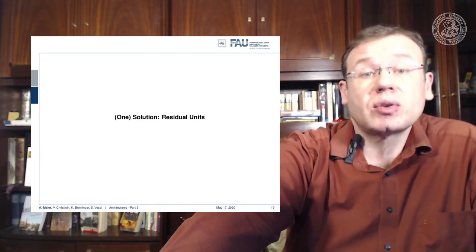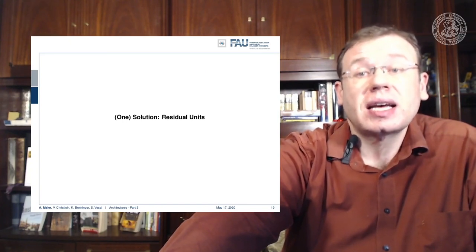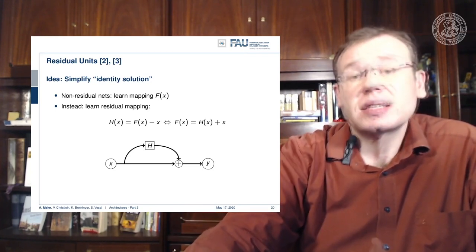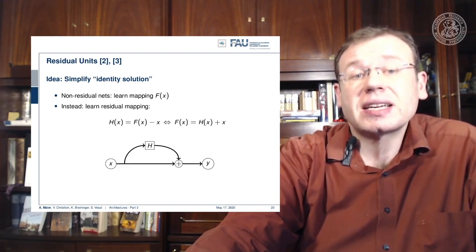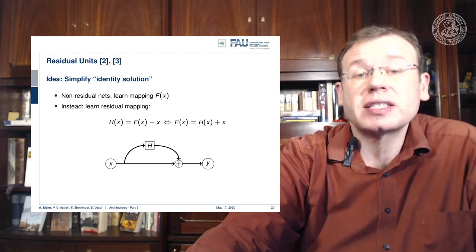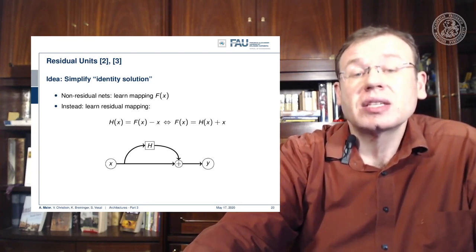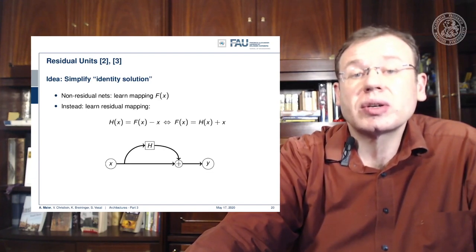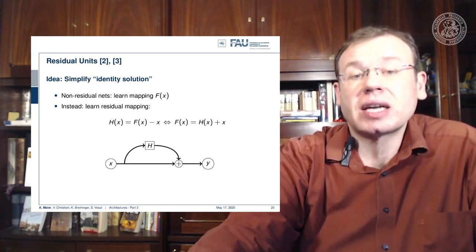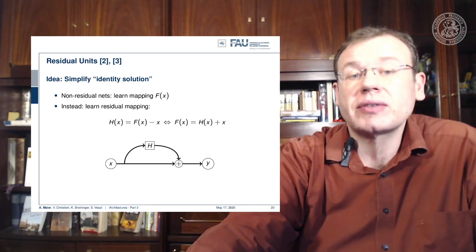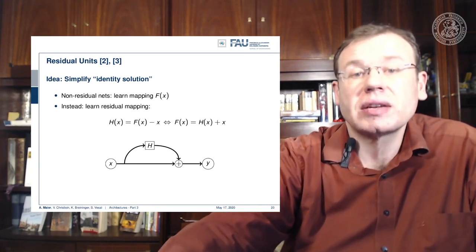I have one solution for you: residual units. Residual units are a very cool idea. What they propose is not to learn the direct mapping f(x), but instead to learn the residual mapping. We want to learn h(x), where h(x) is the difference between f(x) and x. We can express this differently — and this is how it's implemented: you compute your network output as h(x) plus x. The trainable part is now essentially in a side branch, h(x), and on the main branch we have x plus the side branch to deliver our estimate y.